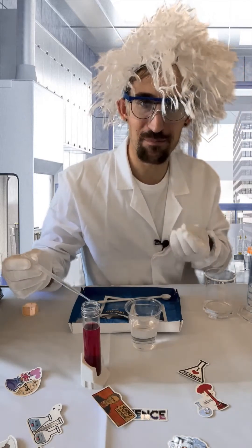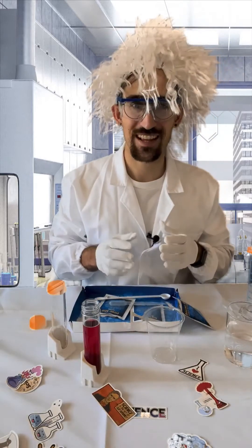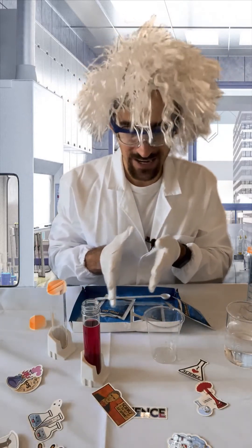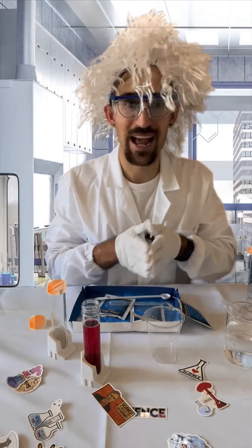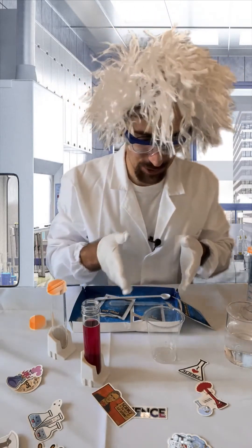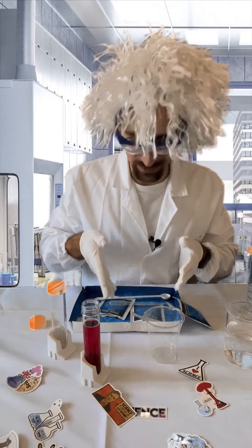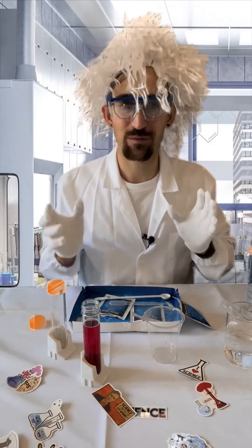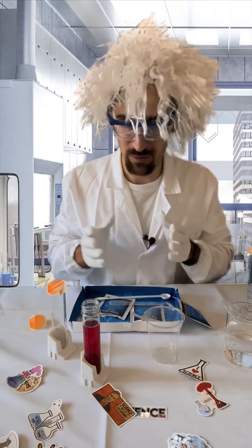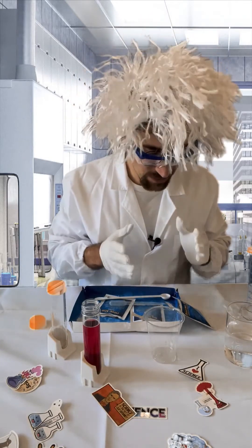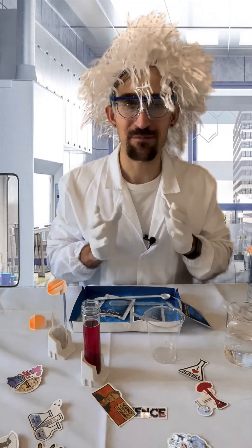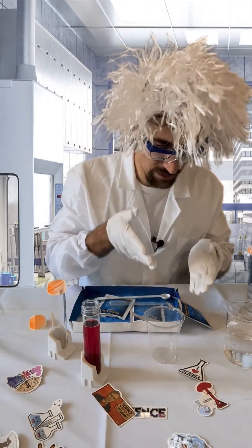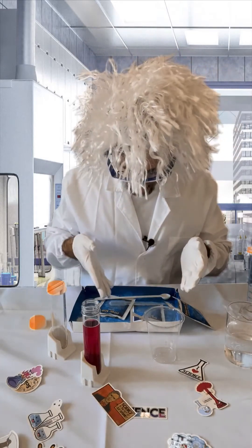Just like that, scientists, we saw how we could take that cabbage solution, the indicator, and turn it more red by adding a more acidic solution, that being the citric acid that we combined with the water. But what if we wanted to go the opposite direction? What if we wanted to make it more basic, aka more alkaline? Well, we can do that as well and the kit comes with that. We're going to be using baking soda instead of the citric acid.